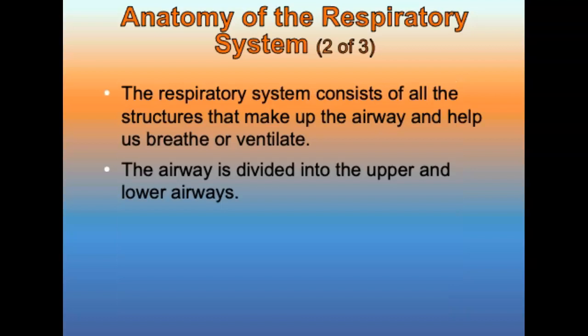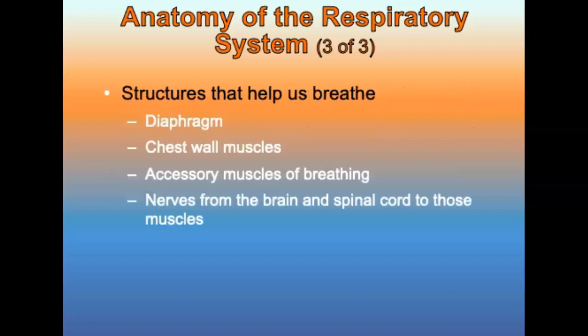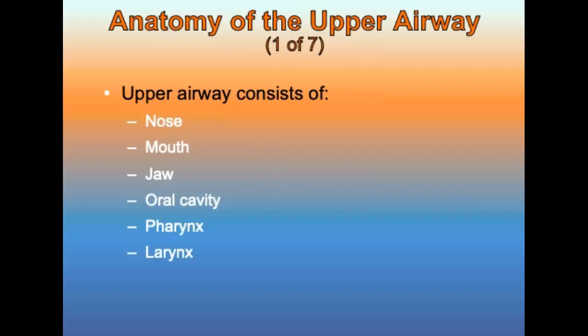Let's talk about the anatomy of the respiratory system. The respiratory system consists of all structures that make up the airway and help us breathe and ventilate. The airway is divided into the upper and lower airways. The structures that help us breathe include the diaphragm, chest wall muscles, and accessory muscles of breathing. Nerves from the brain and spinal cord to those muscles also help us breathe. Ventilation is the exchange of air between the lungs and the environment.